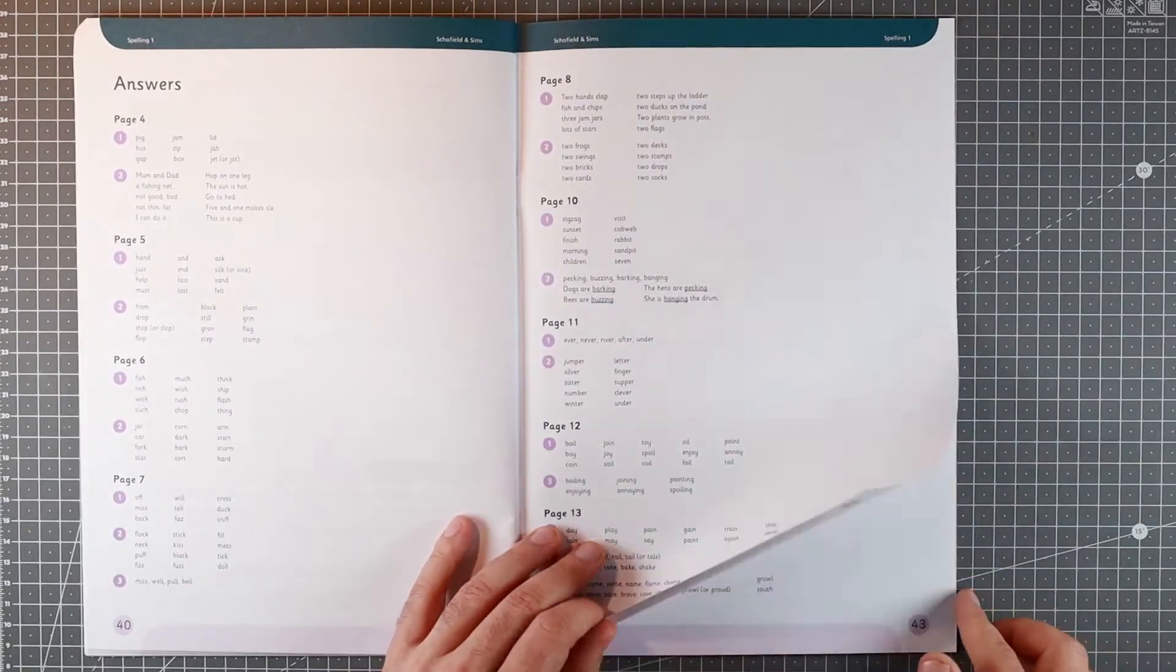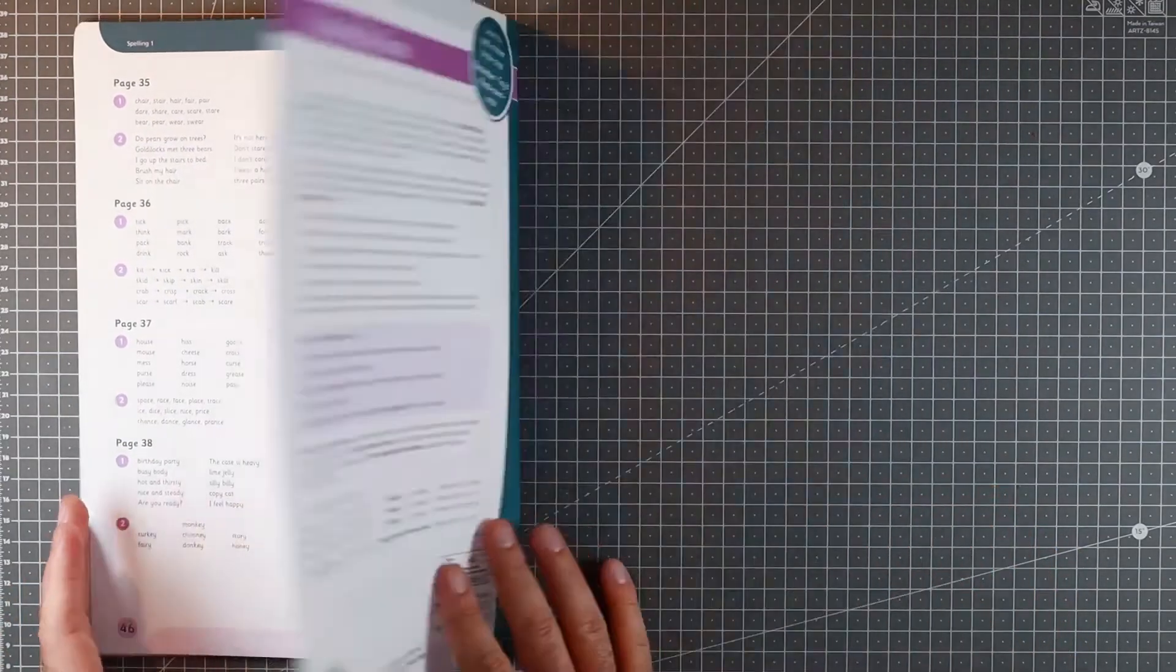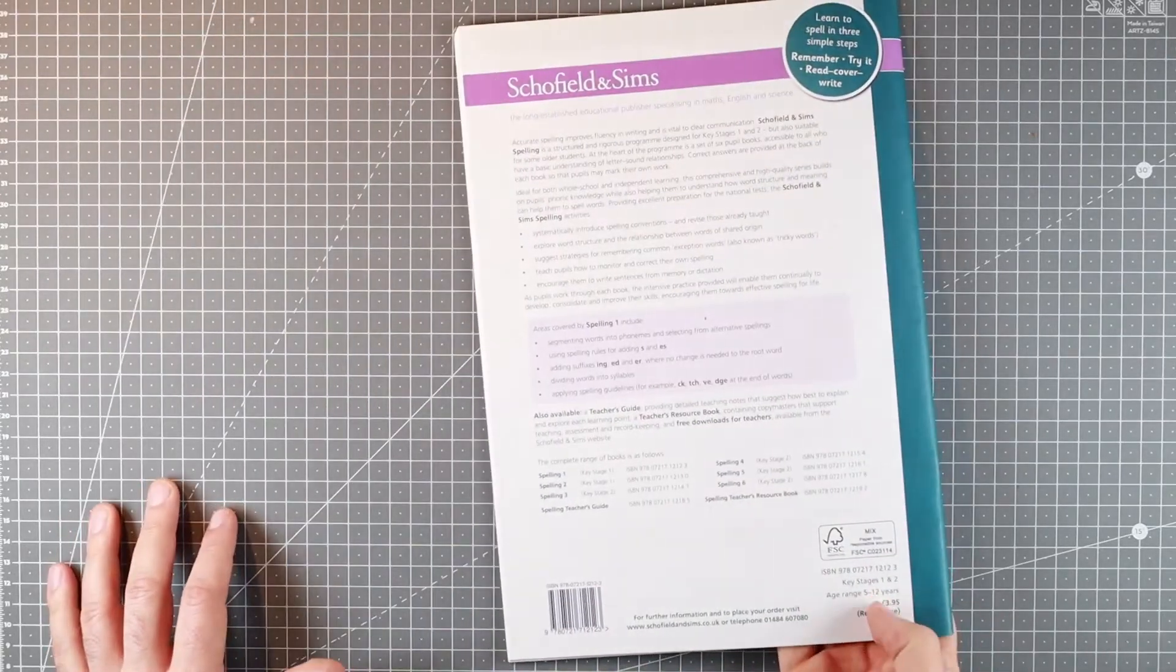As I said, answers at the back. That's it, not much any other information. Printed, published in the UK, so the spelling is British. Four pounds.